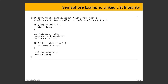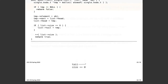Then thread B calls push front: allocates a new node (node B), sets next to be the current head (which is A), sets head to the new node B. Since list size is still zero (not yet incremented), list tail is also assigned to B. List size is incremented to 1 and returns true. When execution resumes in thread A, list size is incremented to 2 and returns true.